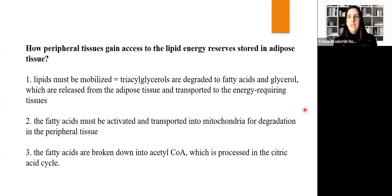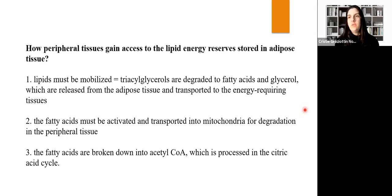We know that we can synthesize fatty acids and use them to produce triacylglycerol, which we store in adipose tissue. But what if we need energy and need to mobilize this reserve? Lipids must be mobilized, so triacylglycerol needs to be degraded to fatty acids and glycerol, released from adipose tissue to tissues requiring energy. Second, fatty acids must be activated and transported into mitochondria. Third, fatty acids are broken down into acetyl-CoA, which is processed in the citric acid cycle to produce energy.